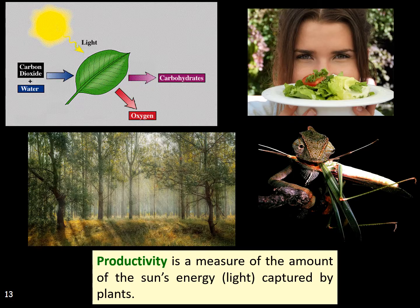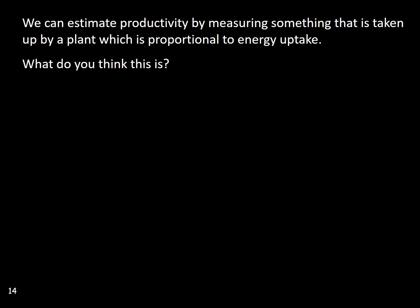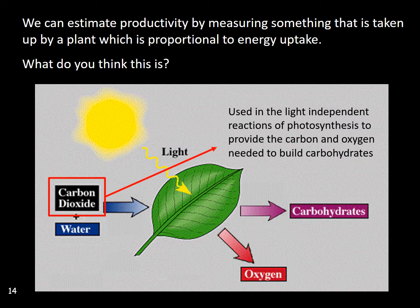The majority of the organic mass of a plant came from the carbon dioxide obtained from our atmosphere. We can estimate productivity by measuring something that is taken up by a plant which is proportional to the energy uptake. The rate of uptake of carbon dioxide is directly proportional to the uptake of light energy from the sun. Carbon dioxide is also a byproduct of cellular respiration, so the rate of release of CO2 is directly proportional to how much energy is ultimately used by plants to run energy-requiring cellular processes.